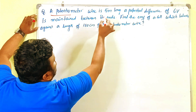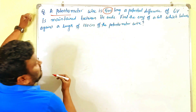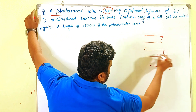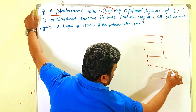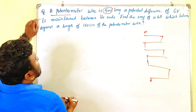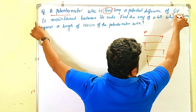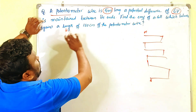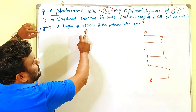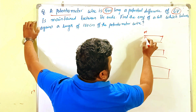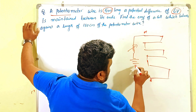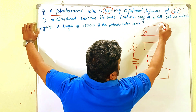The potentiometer wire has a length of five meters. Between point A and point B on the wire, there is a potential difference of six volts. Finally, the EMF of the cell balances at a length of 180 centimeters of the potentiometer wire. This is the primary circuit, and in the secondary circuit there is one cell connected.